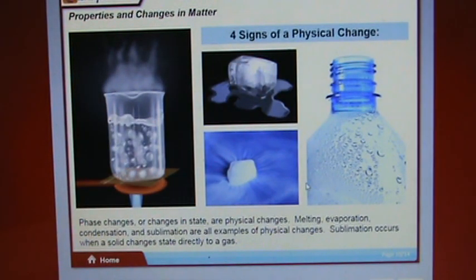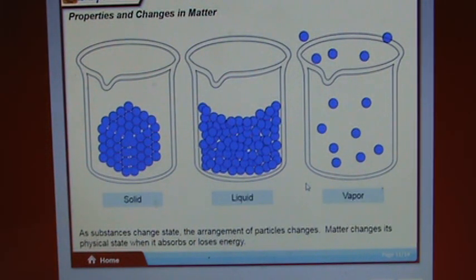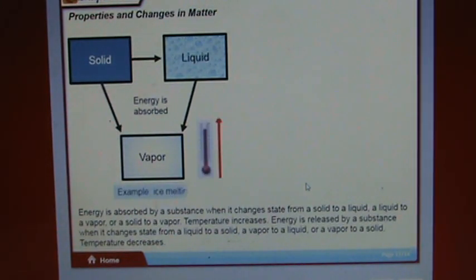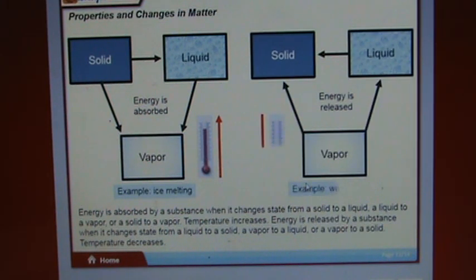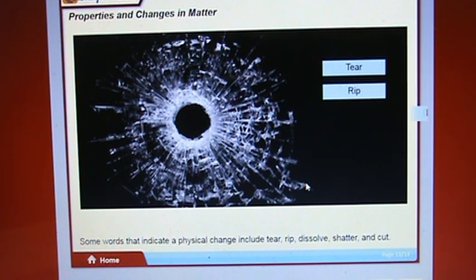Phase changes, or changes in state, are physical changes. Melting, evaporation, condensation, and sublimation are all examples of physical changes. Sublimation occurs when a solid changes state directly to a gas. As substances change state, the arrangement of particles changes. Matter changes its physical state when it absorbs or loses energy. Energy is absorbed when matter changes from solid to liquid, liquid to vapor, or solid to vapor. When changing from vapor to liquid or vapor to solid, temperature decreases. Words indicating a physical change include tear, rip, dissolve, shatter, and cut.